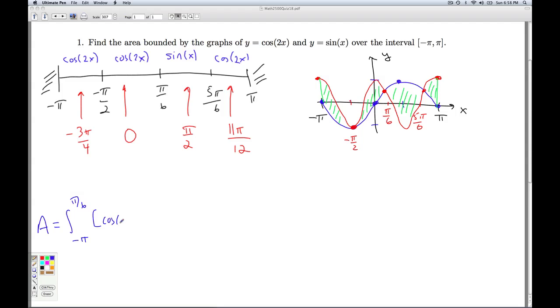Negative pi to pi over 6, the top curve, cosine 2x, minus the bottom curve, sine x. That's going to take care of the area here and here. Now I need to take care of the area there. x goes from pi over 6 to 5 pi over 6. Top curve here is sine x. Minus the bottom curve, which is cosine 2x, dx.